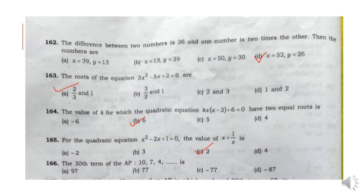Question 166: The 30th term of the AP 10, 7, 4, ... The answer is Option C: minus 77.